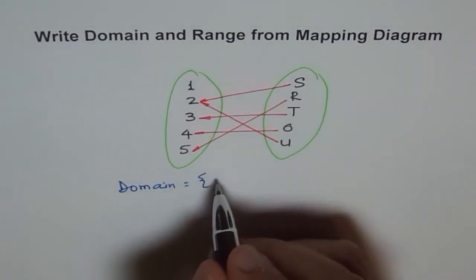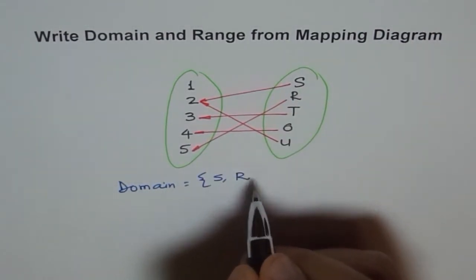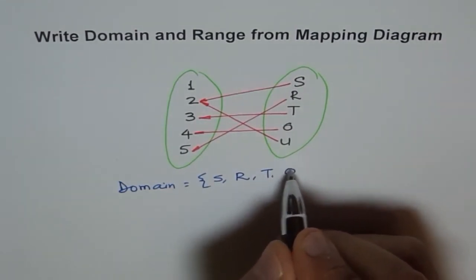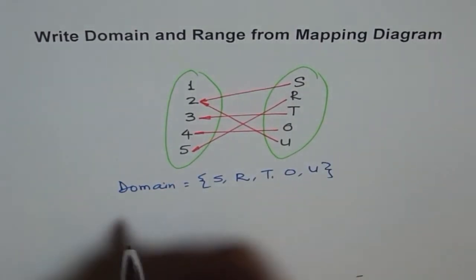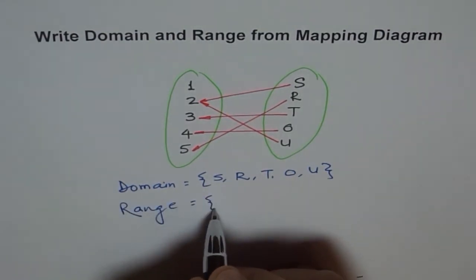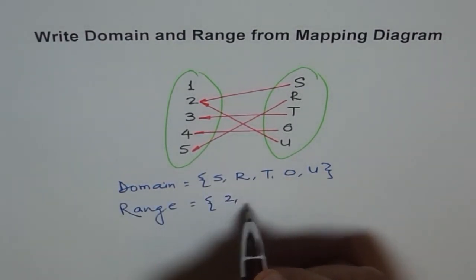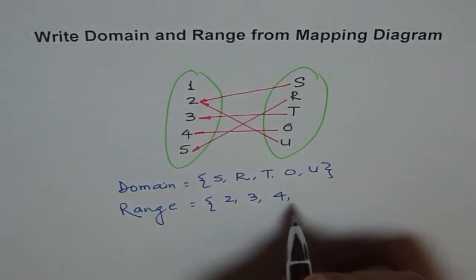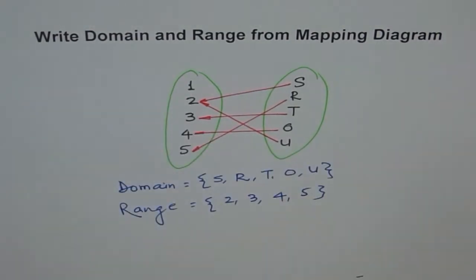You can list all these things in the domain. And the range is two, three, four, and five. Don't include one. One is not associated with anything in the domain side, correct?